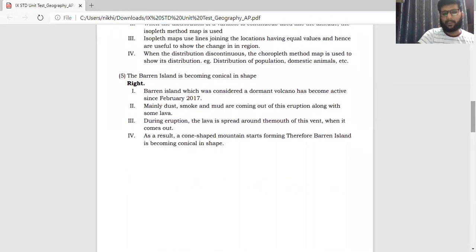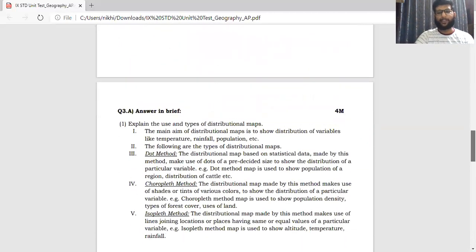Next question. The Barren Island is becoming conical in shape. The answer is right. Barren Island, which was considered as a dormant volcano, has become active since February 2017. Mainly dust, smoke, mud have been coming out during this eruption along with some lava. During eruption, the lava is spread around the mouth of the vent. As a result, a cone-shaped mountain starts forming and therefore Barren Island is becoming conical in shape. Very simple answer. Full 2 marks you can score. Please do attempt the answers as per your convenience. But choose a smarter option for it.